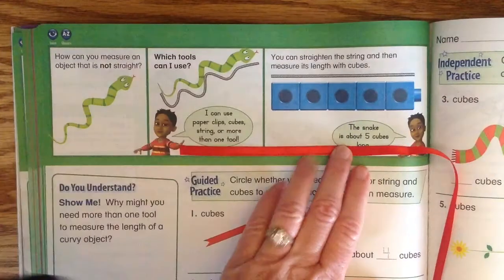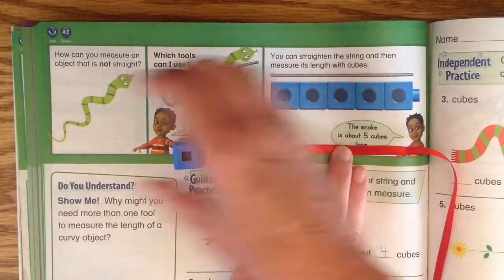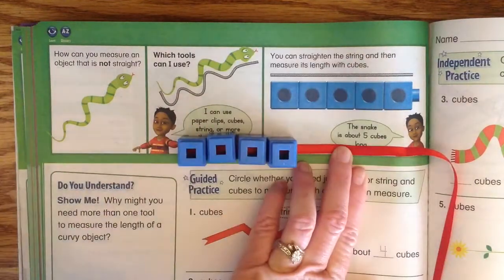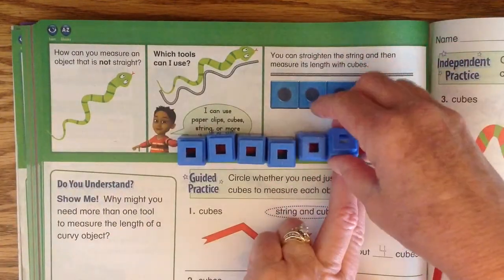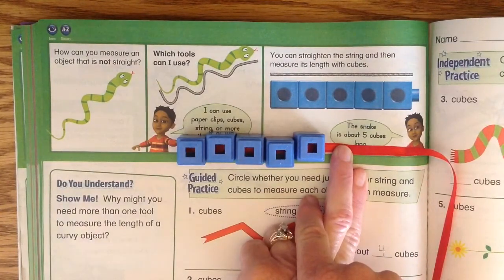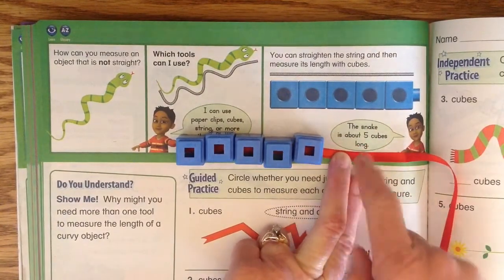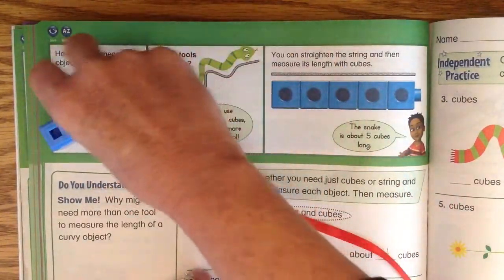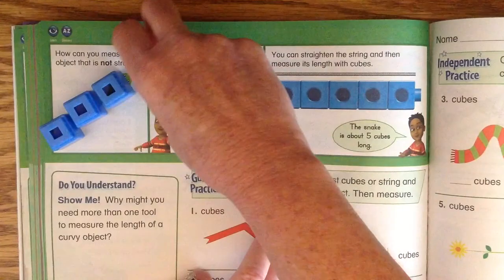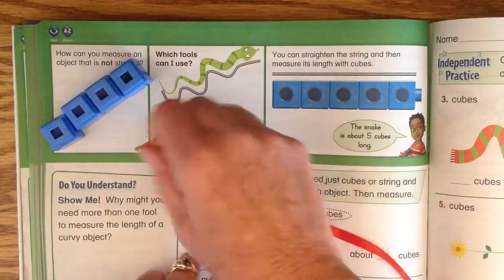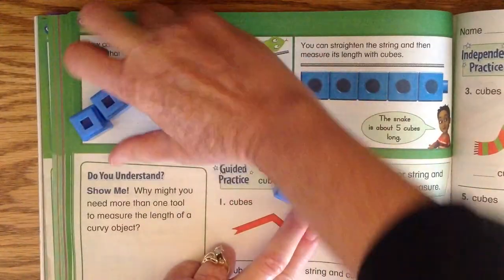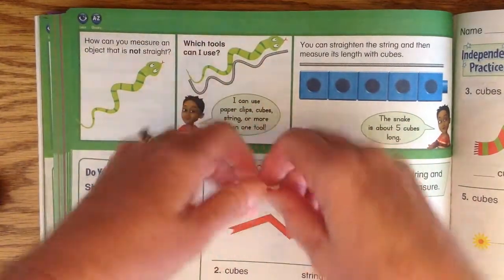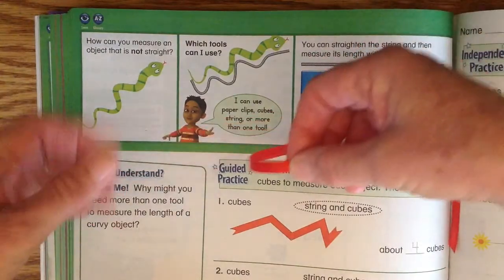Then I can get the cubes and measure how long the string was. So I can use string and then I can use the cubes. The snake is about five cubes long. I would never be able to figure that out by laying them on top, right? He only looks like three or four. But when I use the string and move it along, it's like straightening that snake out when I make it straight.